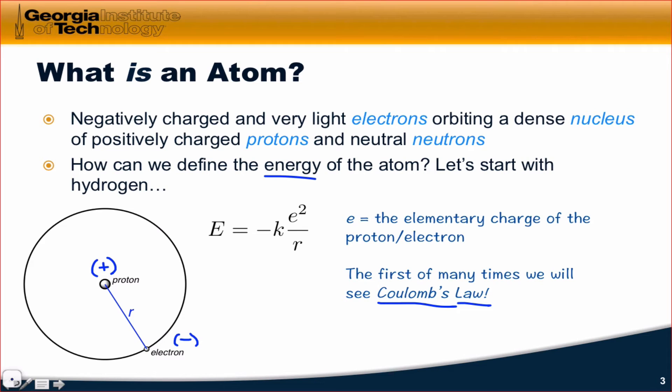Now since, in the case of the hydrogen atom, the electron has a charge of negative e and the proton has a charge of positive e, where e is the elementary charge, the Coulombic energy of the hydrogen atom is equal to negative k e squared divided by r.